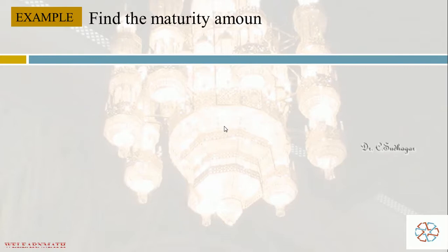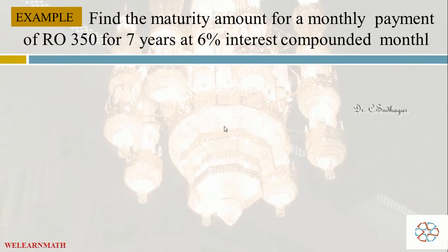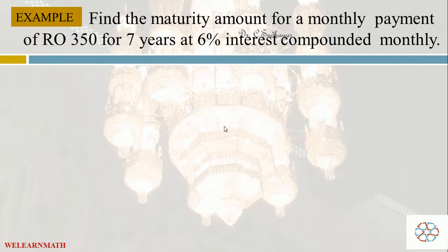Now let us take a new example. Find the maturity amount for a monthly payment of 350 Riyals for 7 years at 6% interest compounded monthly. The difference from the last question is that payments are now made on a monthly basis — not as a lump sum payment. So the data will change a little bit.